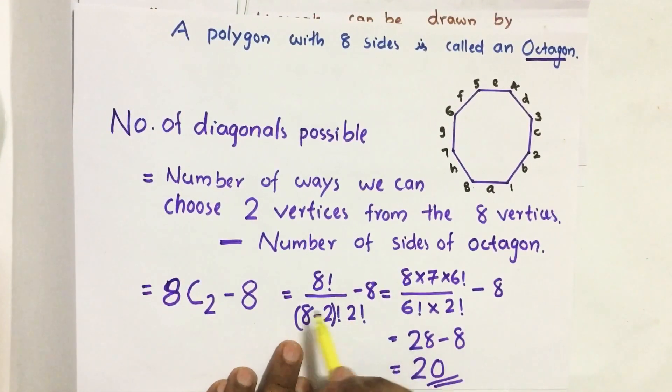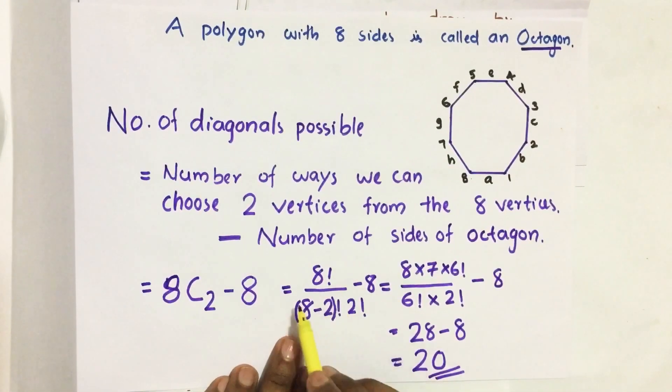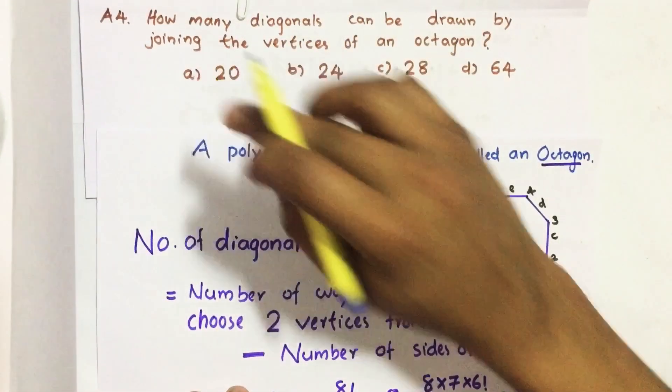By solving this equation we get 8 factorial divided by (8 minus 2) factorial times 2 factorial minus 8. We get 20. So our answer is option A, 20.